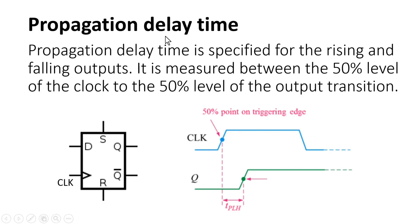What is the propagation delay time? Propagation delay time is measured whenever there is a transition on the output of a flip-flop, and it is measured between the 50% level of the clock to the 50% level of the output transition.